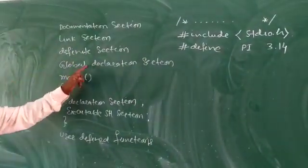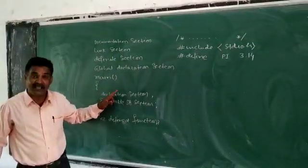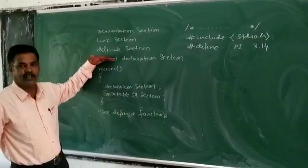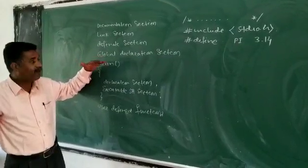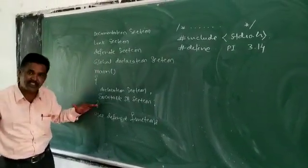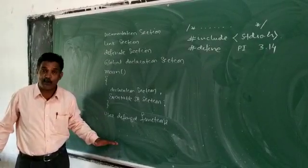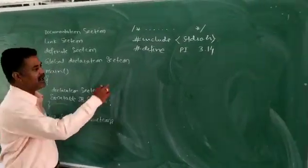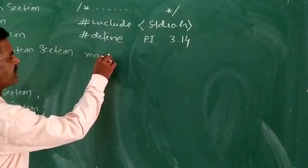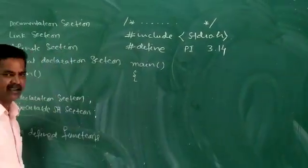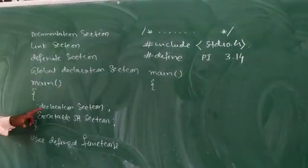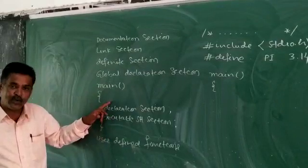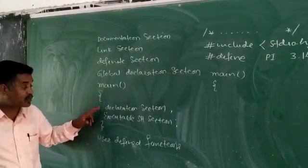The global declaration section and local declaration section are different. Global declaration is nothing but variables declared before the main function, which can be used in the main function or sub-functions. Every C language program has at least one main function. Local declaration: the variables are used only within a specific scope.